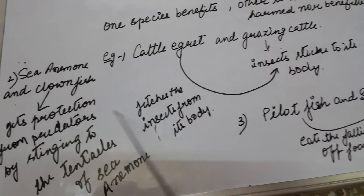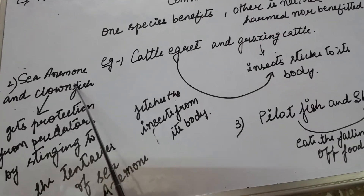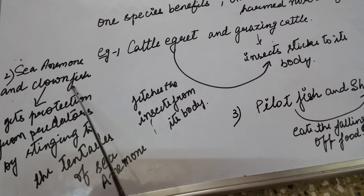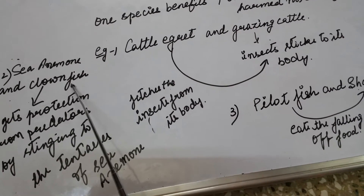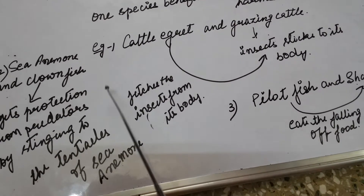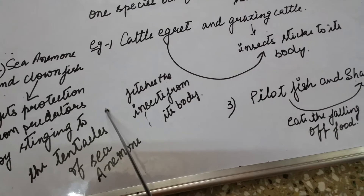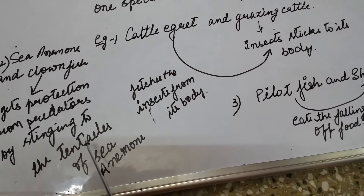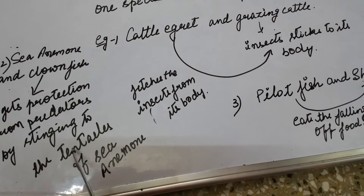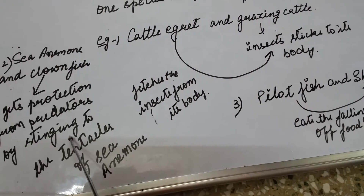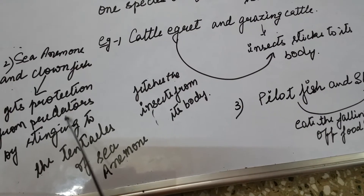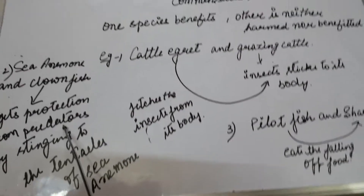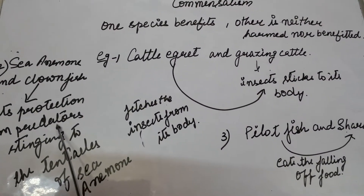Another example is the sea anemone and clownfish interaction. In this interaction, the fish gets protection from predators by attaching to the tentacles of the sea anemone, so that it cannot be recognized by the predators and gets protection.